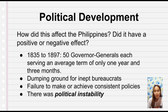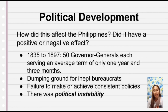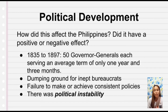They came to the Philippines as poor men but returned to Spain as rich men. There was also a failure to achieve consistent policies, as policies constantly changed because of the changes in government officials. There was indeed political instability in the 19th century.